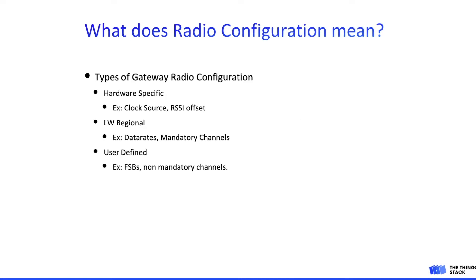The LNS endpoint serves the radio configuration to the gateway, but one of the most commonly asked questions is: what does radio configuration mean? Basically there are three types of radio configuration you can set on a gateway. The first is the hardware-specific configuration, which includes the clock source and the RSSI offset for incoming packets, specific to the hardware of a particular gateway. There is also configuration defined by the LoRaWAN regional parameter specification, for example the data rate indices and mandatory channels for certain regions. On top of that you have user-defined frequency settings, such as the subband for regions like US and AU, or non-mandatory channels for regions like EU.